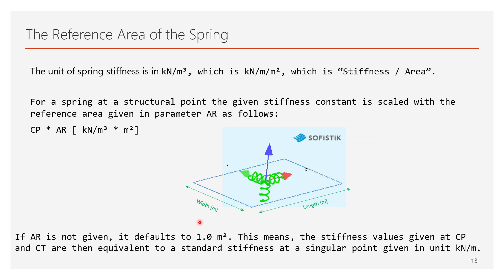For a spring at a structural point, the given stiffness constant is scaled with the reference area given in parameter AR as well. The meter square equals meter by meter, in which one of the m's is the length, and the other m is the width of the imaginary area at the support.